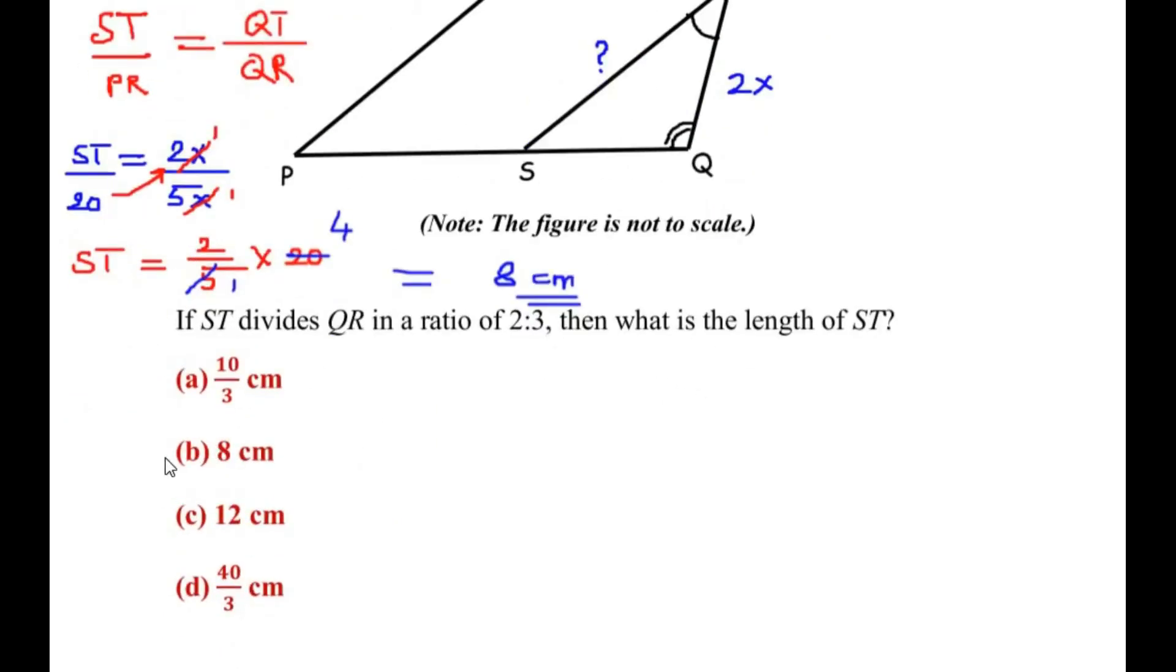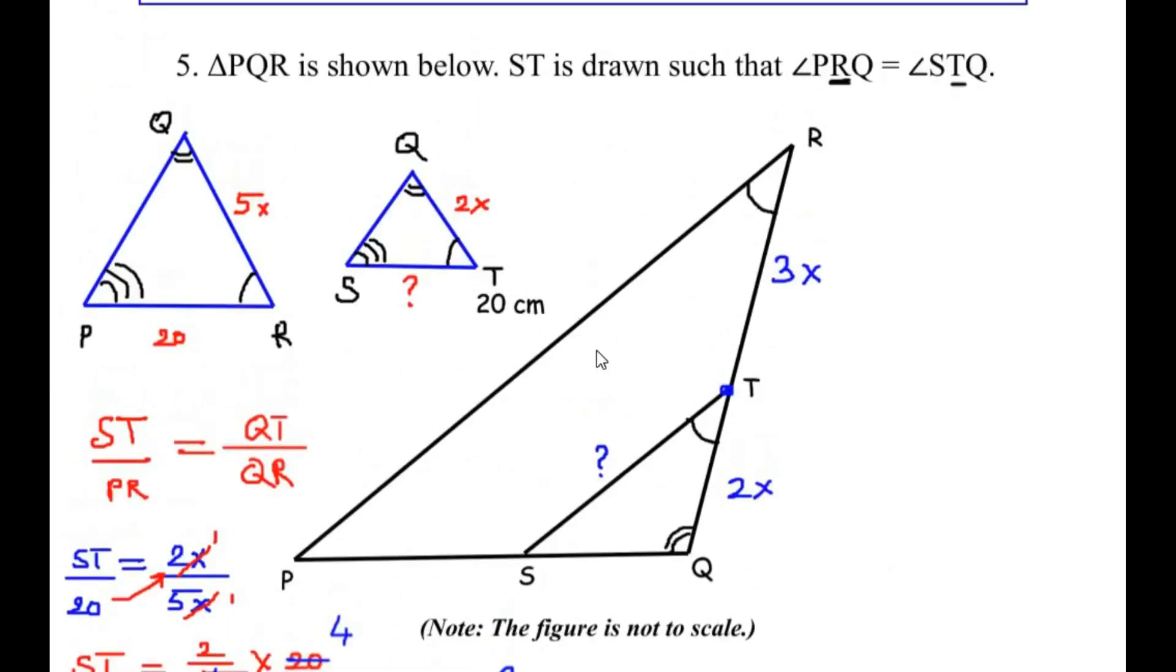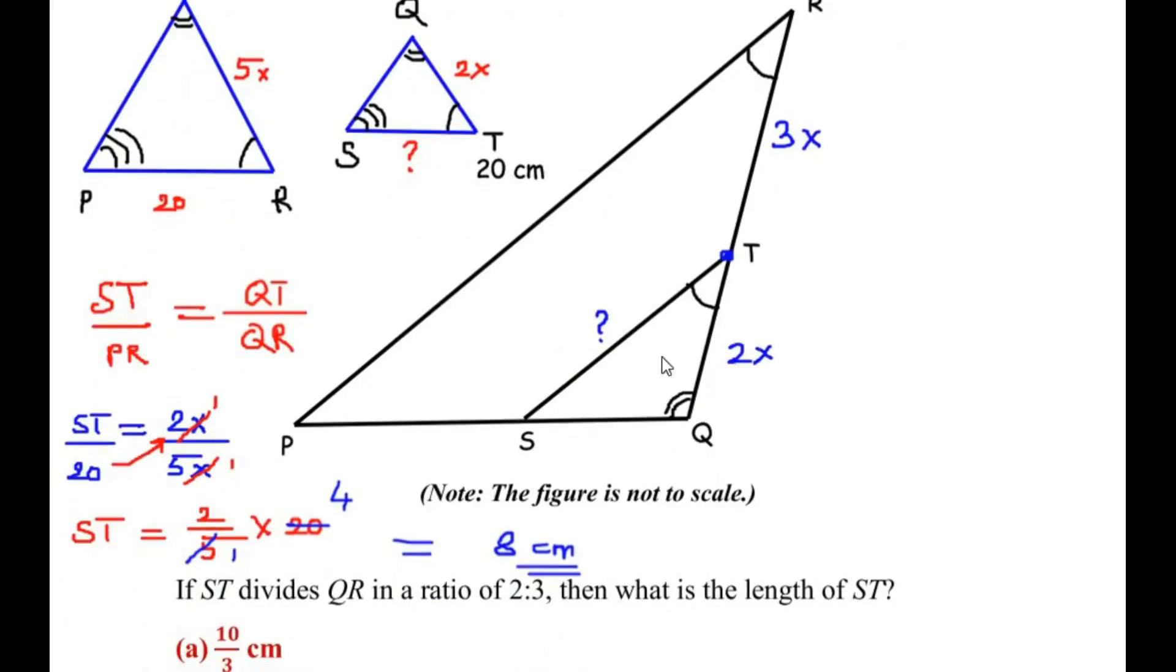So here our option is B. So remember to establish a relationship of the two triangles, saying that the two triangles are similar. So their corresponding sides are proportional. So once you establish this relationship, it becomes very easy to find out the length of the required side.